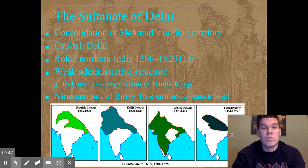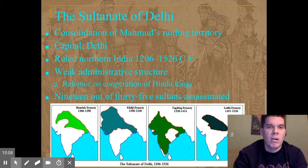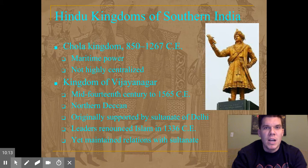It had a pretty weak administrative structure — they basically just depended on assorted Hindu kings to agree with what they did. If those kings agreed, great; if they didn't, the Sultanate didn't really have much ability to keep them in control. Some dynasties controlled most of India, but usually controlling the south was the hardest part for Indian leaders trying to control everything.